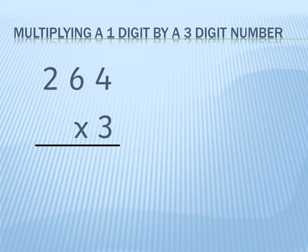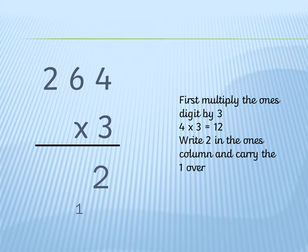Now let's try multiplying a 1 digit number by a 3 digit number. We follow the same method as the 2 digit multiplication. Let's work out 264 times by 3. First we multiply the ones digit by 3, so 4 times 3 equals 12. We put the 2 in the ones column and carry the 1 over.